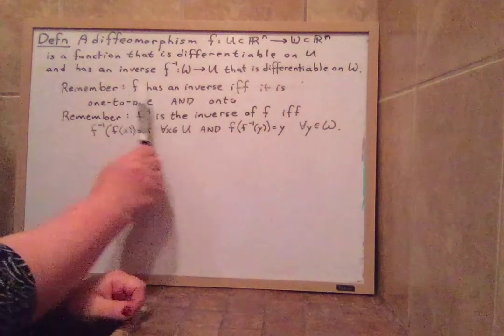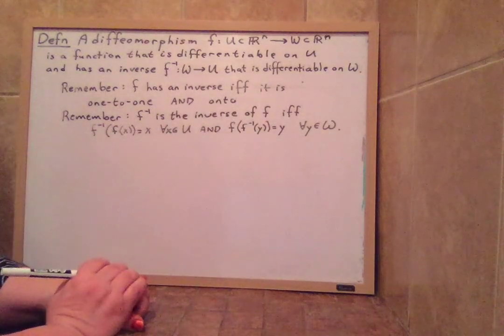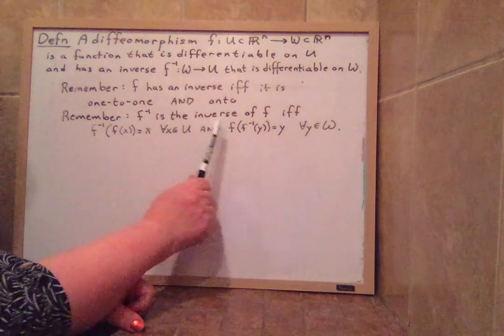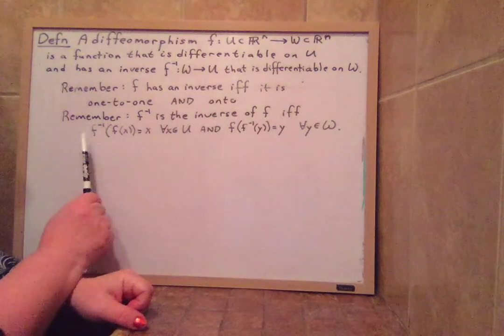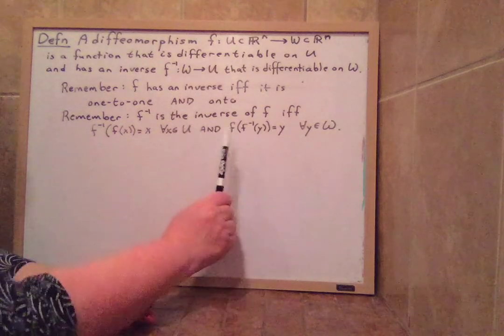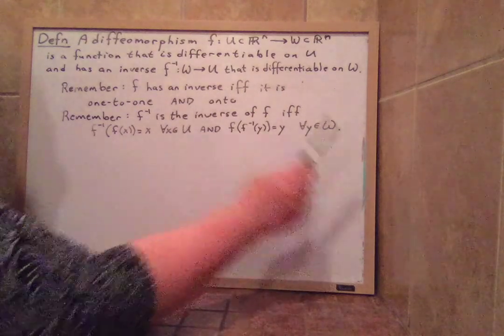Remember that F has an inverse if and only if it is one-to-one and onto. And remember that F inverse is the inverse of F if and only if F inverse of F of X equals X for every X in U and F of F inverse of Y equals Y for every Y in W.